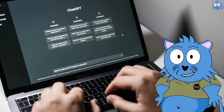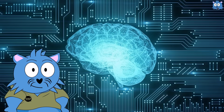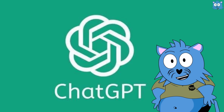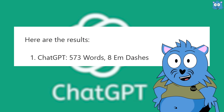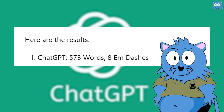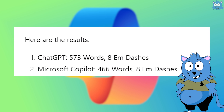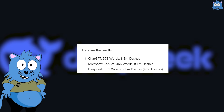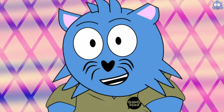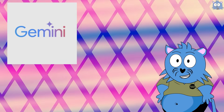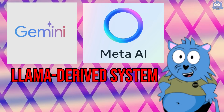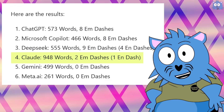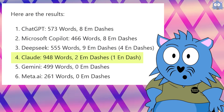But why? It turns out it's mainly due to ChatGPT's LLM. A research experiment compared outputs from a few AI systems given the same prompt. OpenAI's ChatGPT produced a 573-word article containing 8 M-dashes, and a similar pattern was seen in Microsoft's GPT-based Copilot. DeepSeek, which is originally GPT-based as well, used 9 M-dashes in about 550 words. Conversely, models like Google's Gemini and Meta's Llama used 0 M-dashes in responses of similar length, while Claude was somewhere in between.